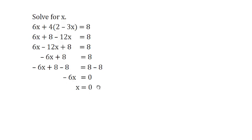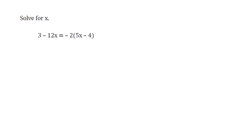If you get an answer like this you can check it easily by substituting the 0 in there just to make sure that this side also equals 8. Here's another one. Solve for x: 3 subtract 12x equals negative 2 times the quantity 5x minus 4.